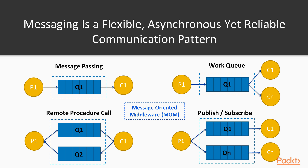Messaging is a very flexible, asynchronous, yet reliable communication pattern, and by using it you can implement quite a few different communication patterns. At the center of messaging is always the message-oriented middleware — a message broker that decouples the producer and consumer. The simplest form is message passing: one queue, one producer, one consumer. A work queue has one producer and multiple consumers sharing the work. You can even implement remote procedure calls using messaging with two queues. And publish-subscribe has one publisher and multiple consumers, each listening on their own queue or topic.